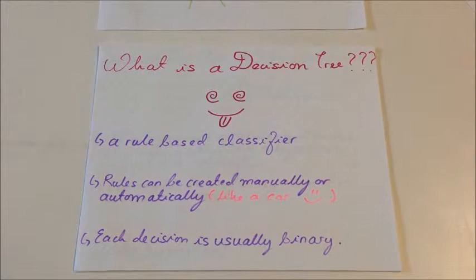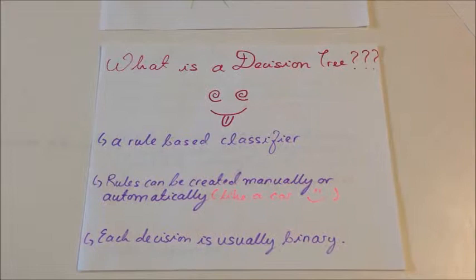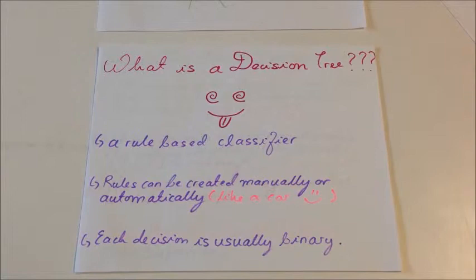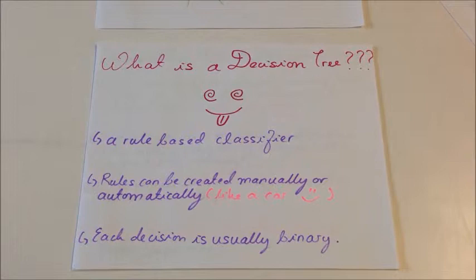A decision tree is a rule-based classifier. Rules can be created manually or automatically, and each decision is usually binary in the decision tree. A decision tree is a decision support tool that uses a tree-like graph or model of decisions and their possible consequences, including chance event outcomes, resource costs, and utility. It is one way to display an algorithm.